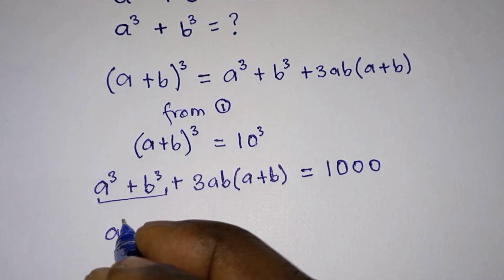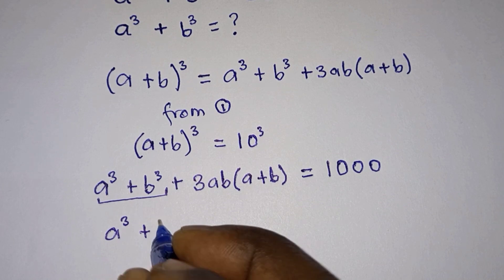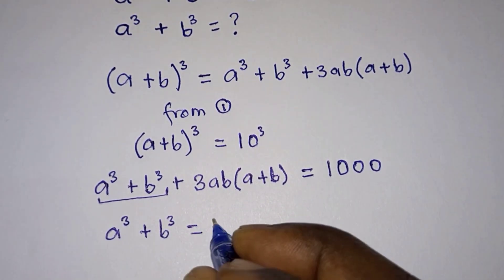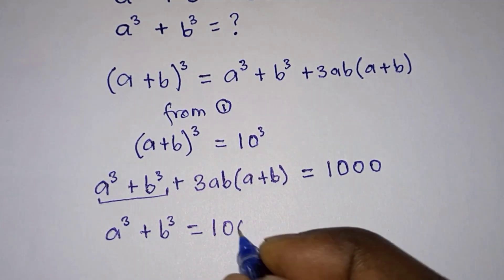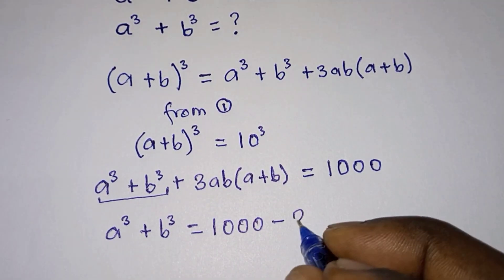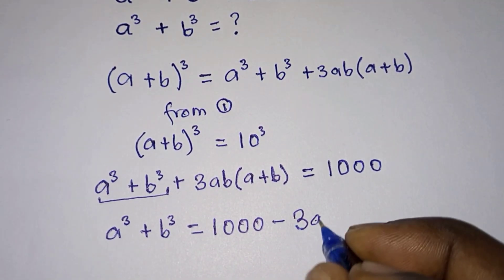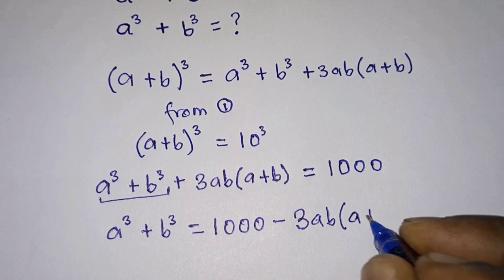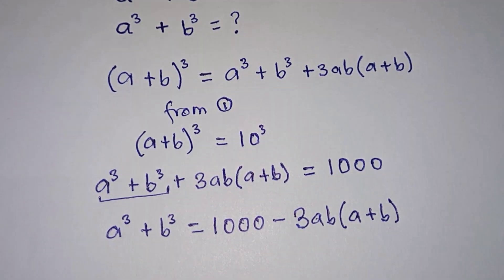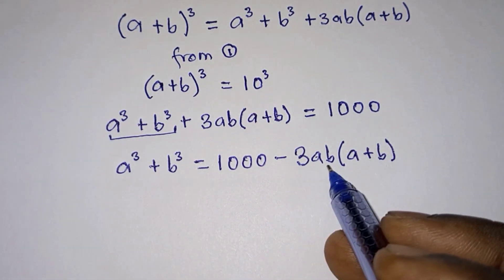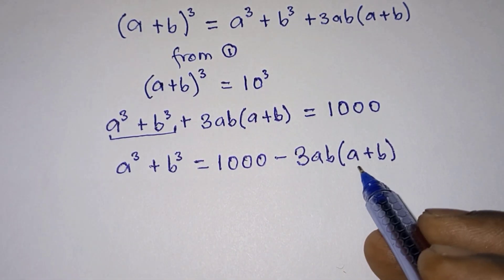This is what we are looking for, so let's go ahead and make it the subject. We have a cubed plus b cubed is equal to 1000 minus 3ab times (a plus b). Now what is ab and what is a plus b?